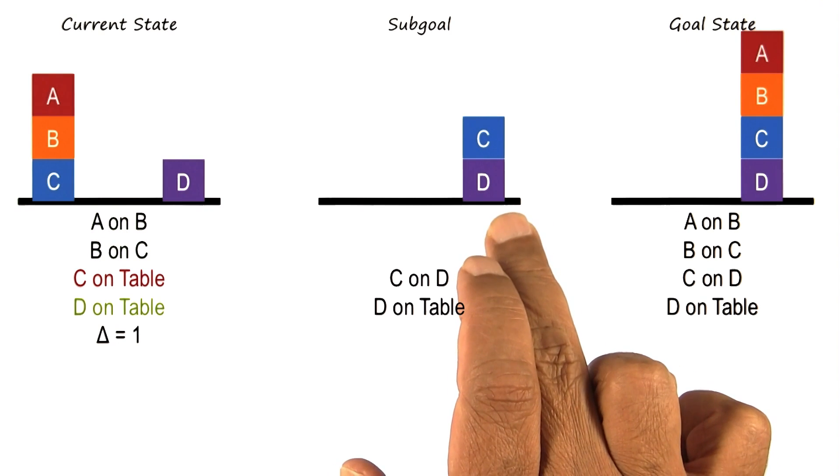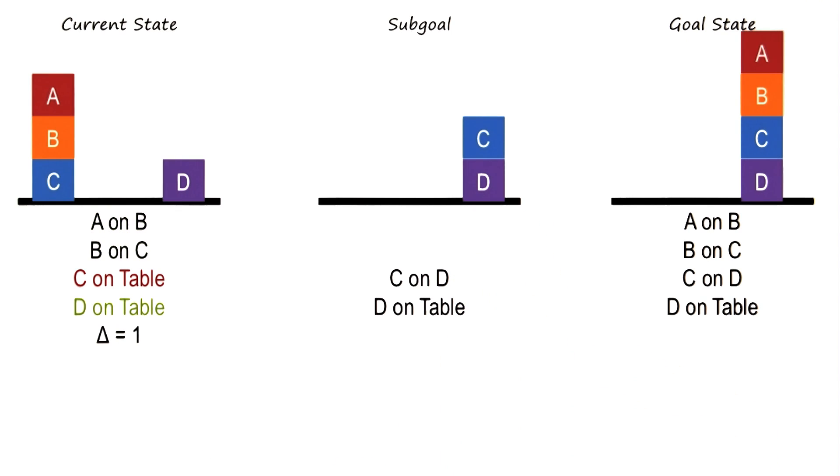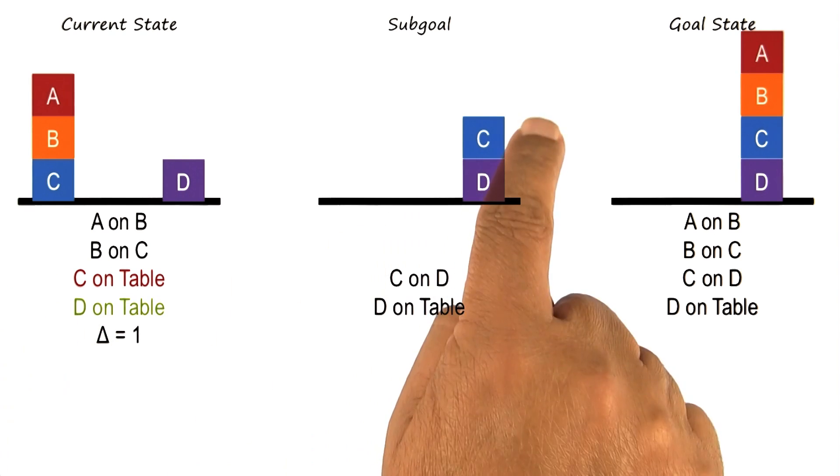Now that we have C over D as this sub goal, we really don't care about whether A is on B or B is on C. What we are focused on is the other two states, C is on table, D is on table, because those are the blocks that occur in the goal state.